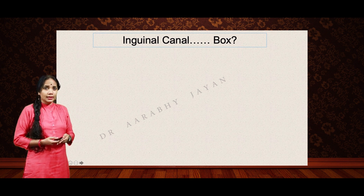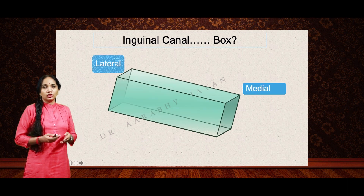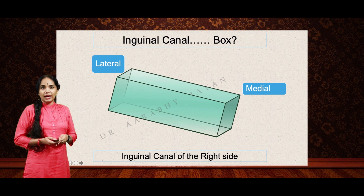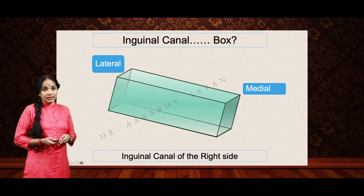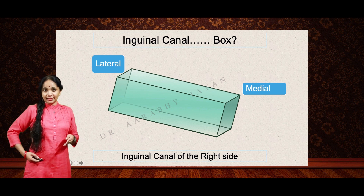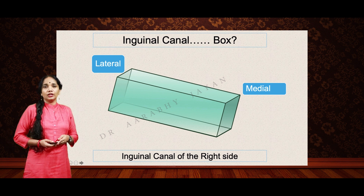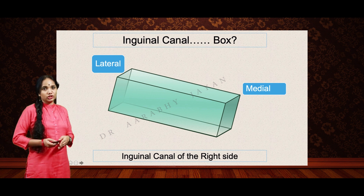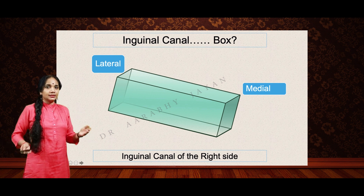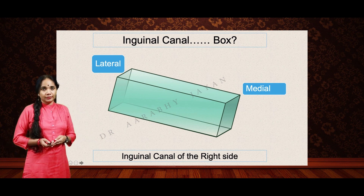So how does the inguinal canal become a box? Let's place a box over there. We have marked the medial end and the lateral end, so this is the right inguinal canal. It is oriented downwards, with the lateral side and the medial side labeled.